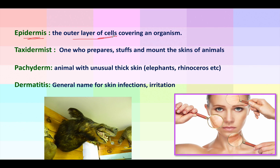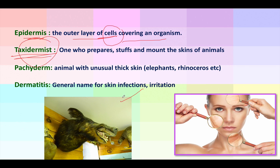The epidermis is the outer layer of cells covering an organism — the outermost layer of the skin. Who is a taxidermist? A taxidermist is a scientist who skins an animal, then mounts it by filling the skin with cotton or other artificial substances to make it look original. What is a pachyderm? 'Derm' means skin and 'pachy' means thick. So animals with very thick skin — like elephants and rhinoceroses — are pachyderms.